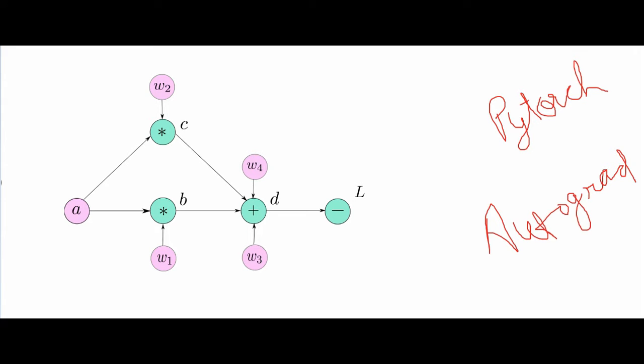It is a reverse automatic differentiation system. Computational graphs are basically similar to a graph structure, but the nodes are real mathematical operators, which helps us in doing the forward pass for the model.